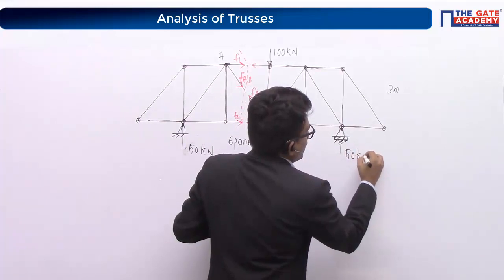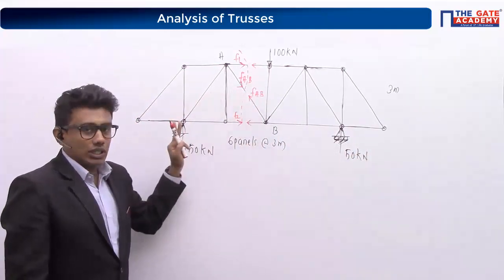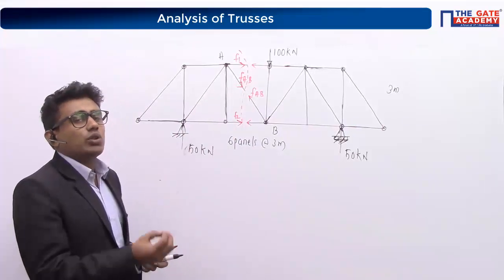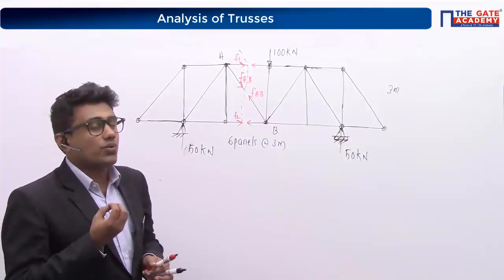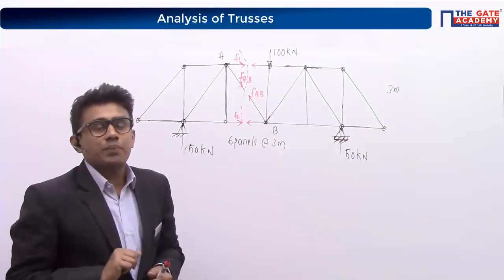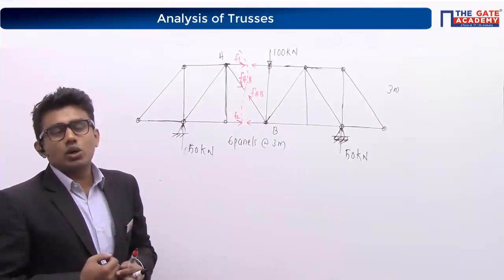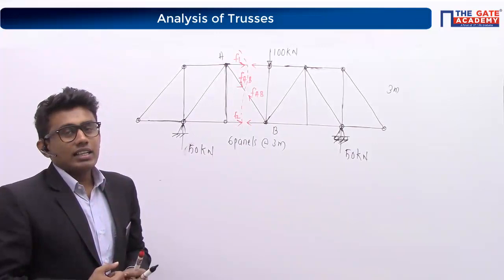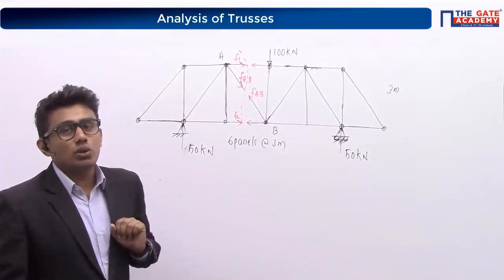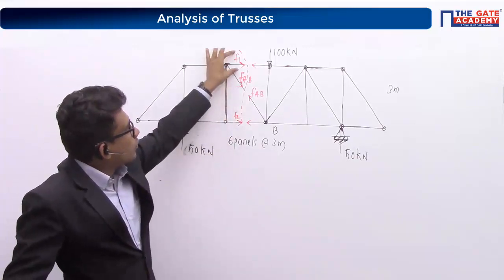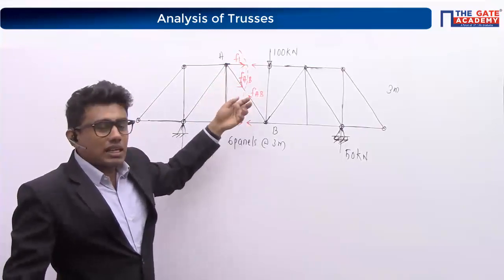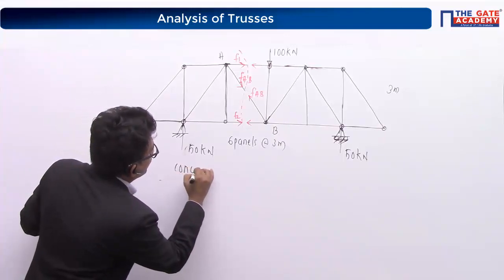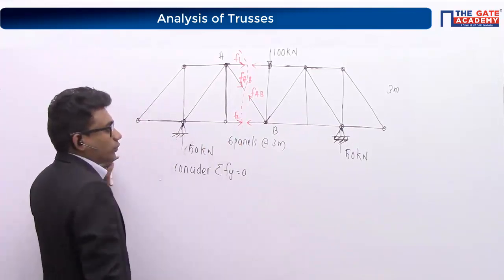Considering only the left part of the truss, I apply the equilibrium equations. The height of the truss is 3 meters and each panel length is 3 meters, making the angle 45 degrees. To find FAB, I use sigma Fy = 0. If I use sigma Fx = 0, I have F2, F1, and FAB cos theta, which is inconvenient. Using sigma M about a point would not isolate FAB directly.